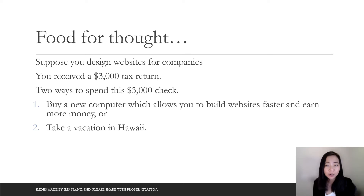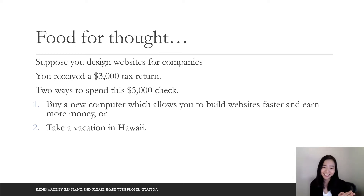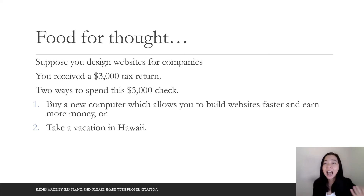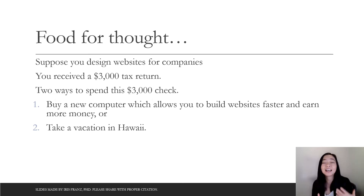There is no right or wrong answer. If you choose to buy a new computer to produce more websites in the future, that means you choose capital goods. If you choose to go to Hawaii, that means you choose consumption goods. If you choose the computer, you're going to have a higher income in the future. If you choose Hawaii, your income growth is not going to be as high.